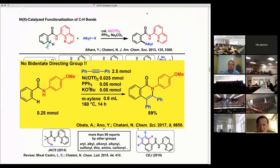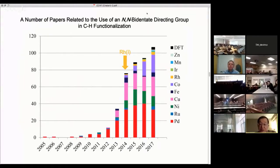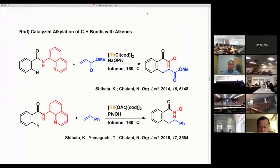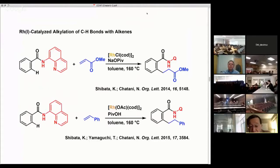The nickel-catalyzed C-H functionalization reaction has now entered a new generation. However, this topic is beyond the scope of today's lecture, so I will focus my discussion on the rhodium-catalyzed reaction. We reported the rhodium-catalyzed C-H alkylation of aromatic amides with alpha-beta-unsaturated esters in 2014 and styrene in 2015. The reaction pattern is very simple: the C-H bond is added across the C-C double bond of an activated olefin. However, the reaction was found to proceed through a new mechanism involving the generation of a rhodium carbene intermediate from the olefin.